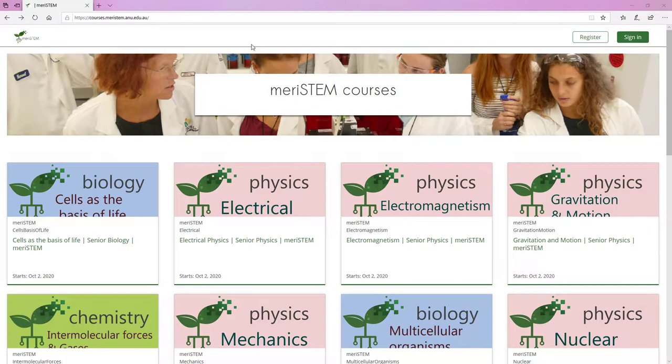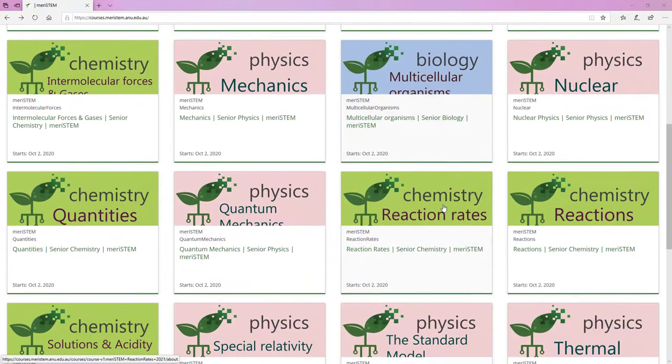Head over to our updated platform, courses.meristem.anu.edu.au. You'll be able to see the range of modular senior science courses we now have available on this front page.